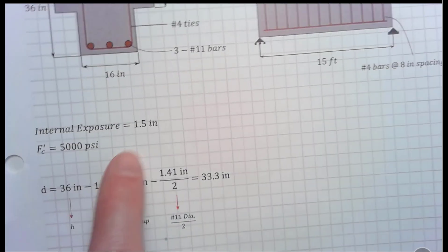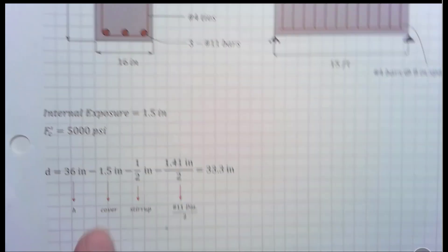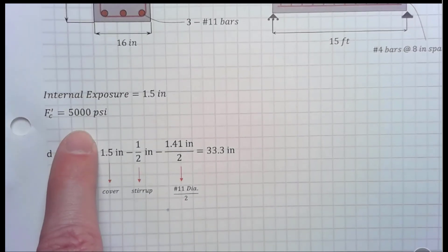Now, this is an internal exposure, so the cover is 1.5 inches, and the strength of the concrete is 5,000 PSI.